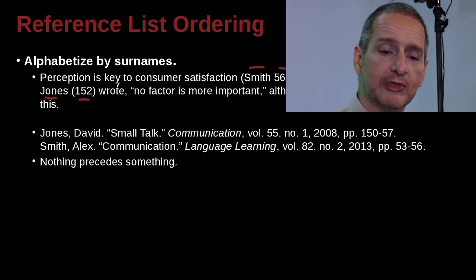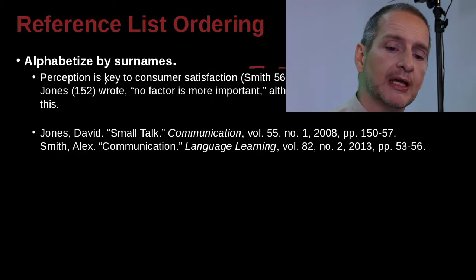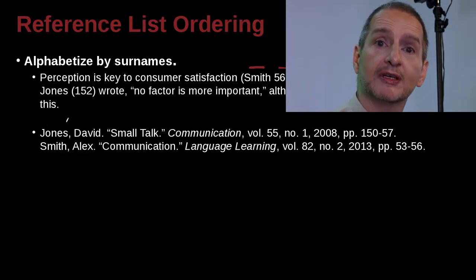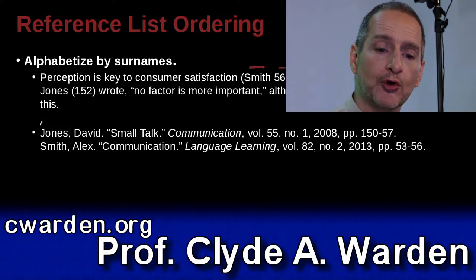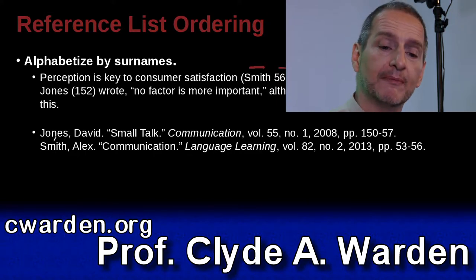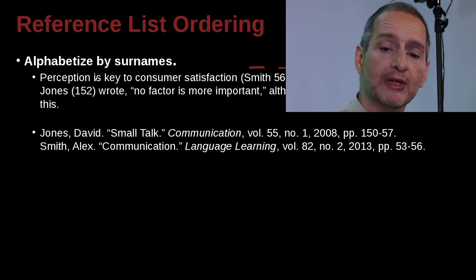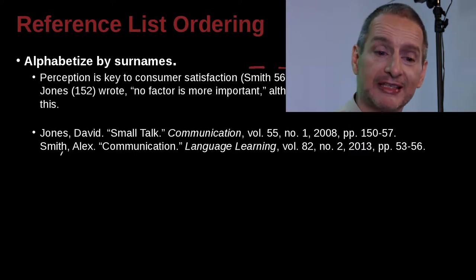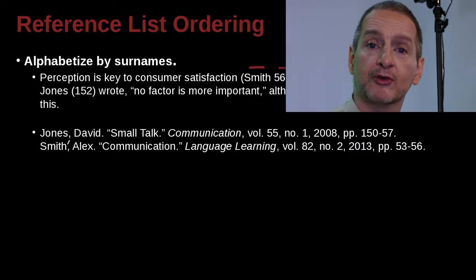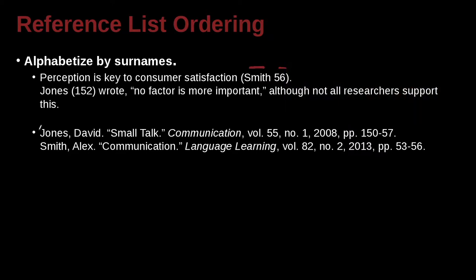The reference list would look something like this example here: Jones, David, and Smith, Alex. Jones comes first and Smith comes later, because J is before S. So even though inside the text Smith may come first, we don't do that in the actual reference list. We do it by alphabetical order. All of your references at the end would begin with A and go all the way to Z.